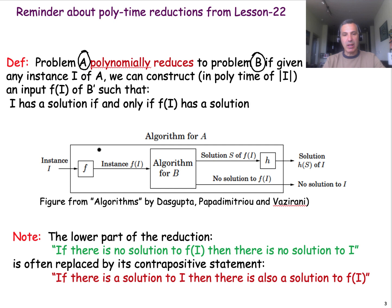You can think of this visually, and I'm borrowing this figure from the textbook Algorithms by Dasgupta, Papadimitriou and Vazirani. So imagine that we're constructing an algorithm for solving problem A as a black box that consists of an algorithm for solving problem B.